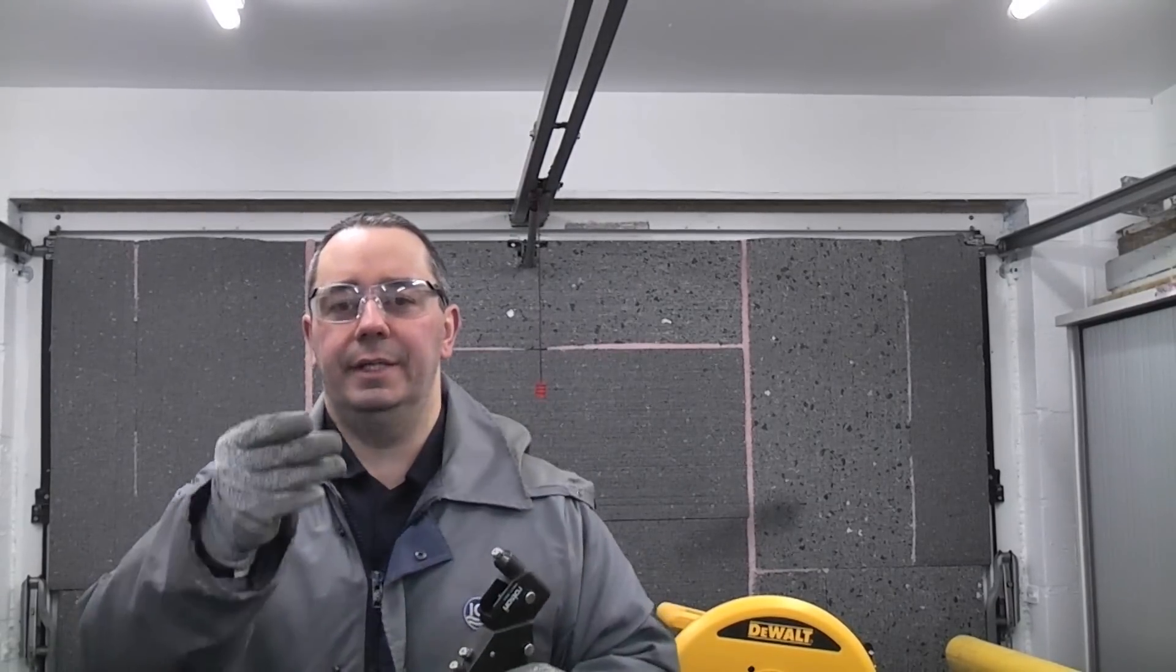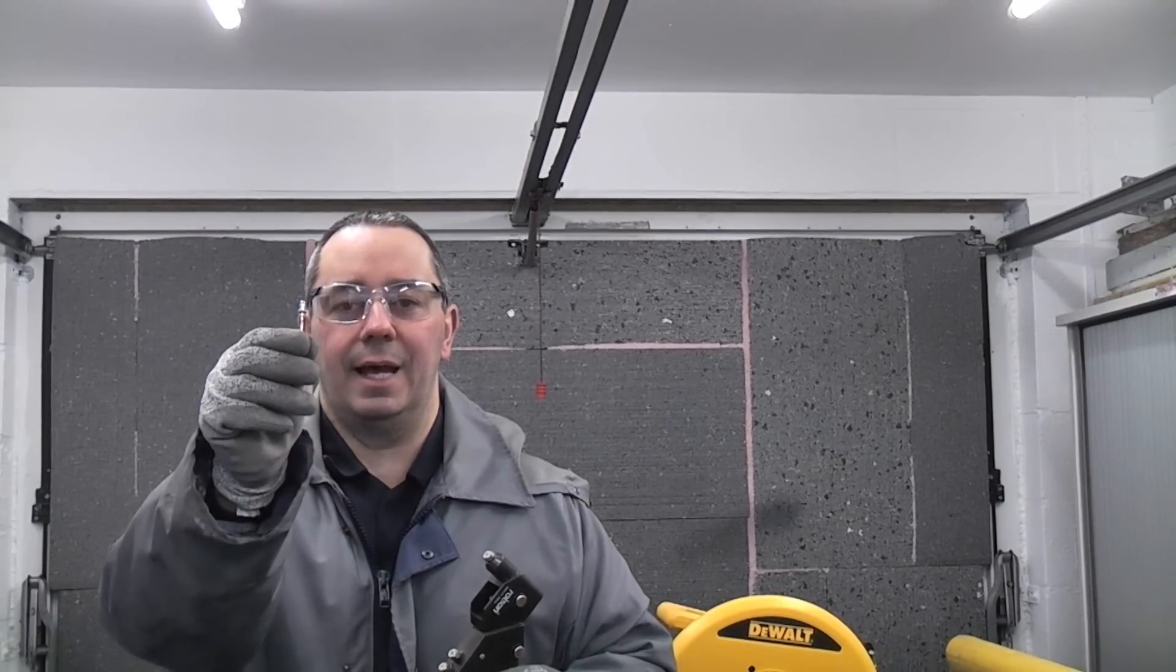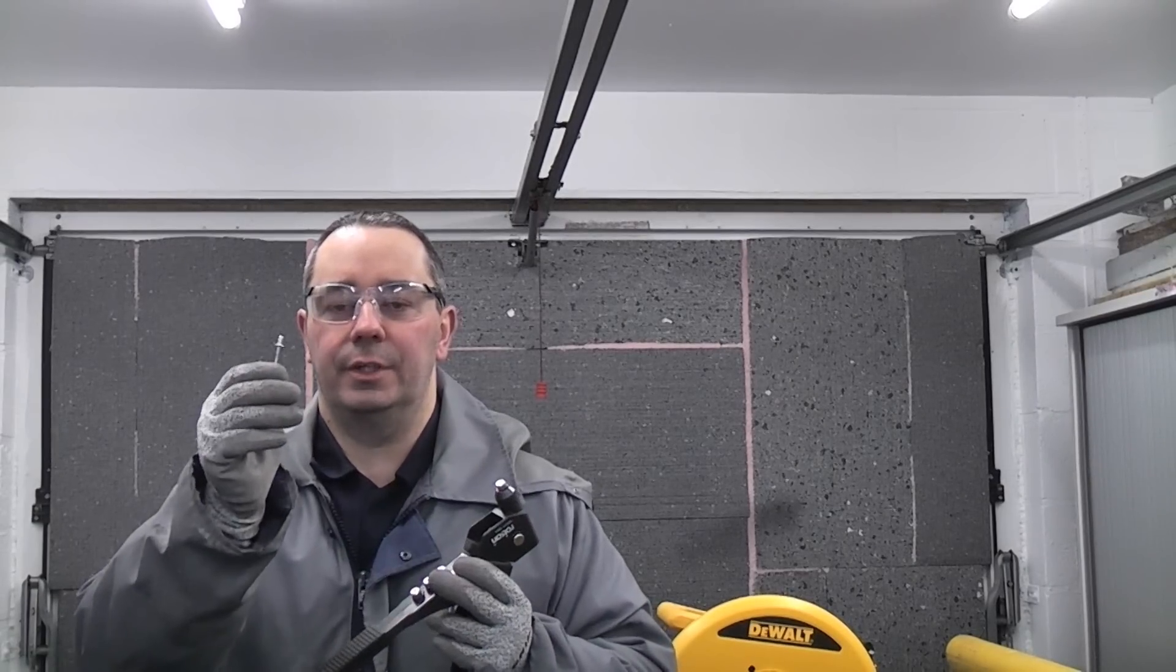So you get the gun and you need the rivets which are like that. You're also going to need a drill bit of a suitable size for the rivet that you're using.